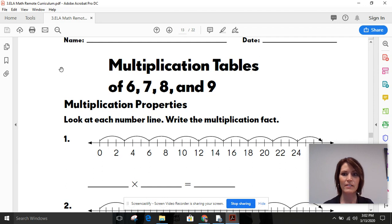In your packet, about halfway back, you'll find those math pages. The very first math page is going to look like this page that I have right here on my screen. So, can you find that page? We're going to look at this first one together. The page says, multiplication tables of six, seven, eight, and nine. Multiplication properties. Look at each number line. Write the multiplication fact.